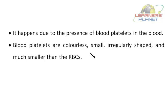Blood platelets are colorless, smaller than RBCs and WBCs, irregularly shaped, and much smaller than RBCs. Blood cells constantly wear out and die and are replaced from the bone marrow. Red blood cells die at the rate of 200 billion per day, but the body produces new cells at an average rate of 9,000 million per hour.